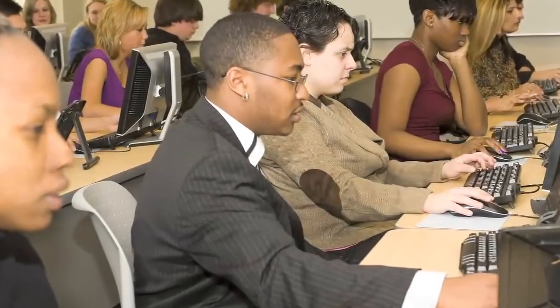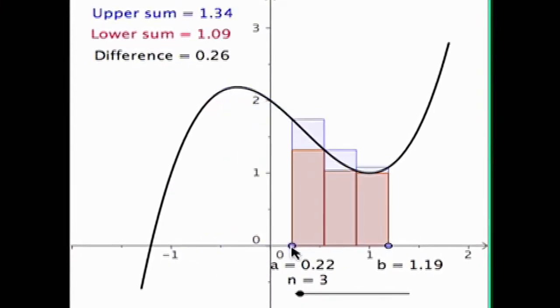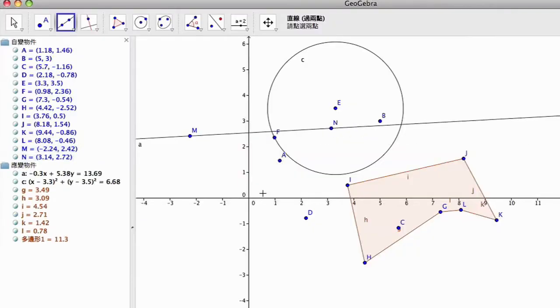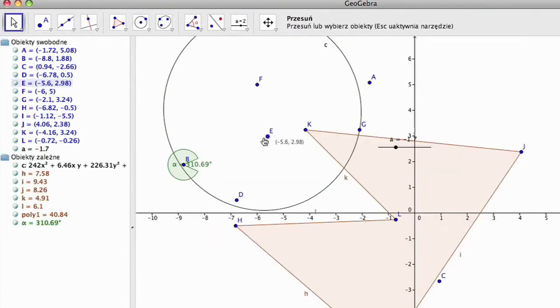We have about half a million visitors every month on our web page and we have about 300,000 downloads. A very important factor for us was translations. Teachers and students want to learn in their own local language. It's very important. So after a while, people started to translate it, and today we have about 50 translations.